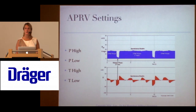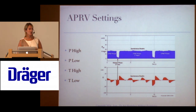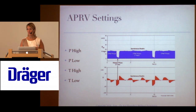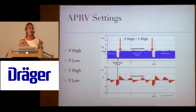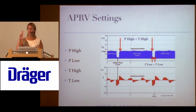The settings for APRV: you have a P high (pressure high), a P low (pressure low), time high, and time low. Together, the P high and T high make up the CPAP phase. And together, the P low and T low make up what we call the release phase.